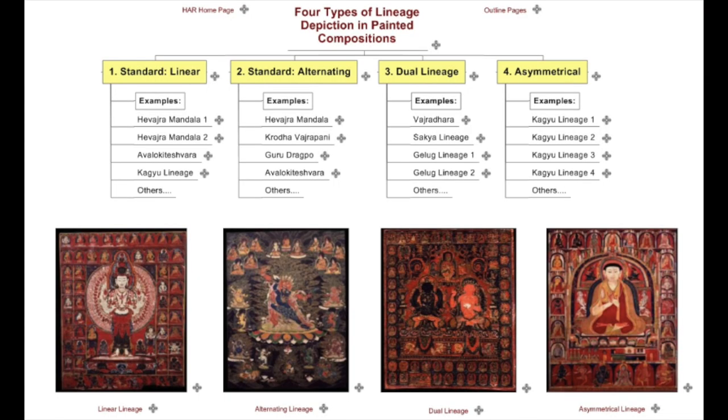Now, in terms of painting and how lineages are depicted, we have four types within a single composition. There are four ways of placing the lineage: linear, alternating, dual, and asymmetrical.